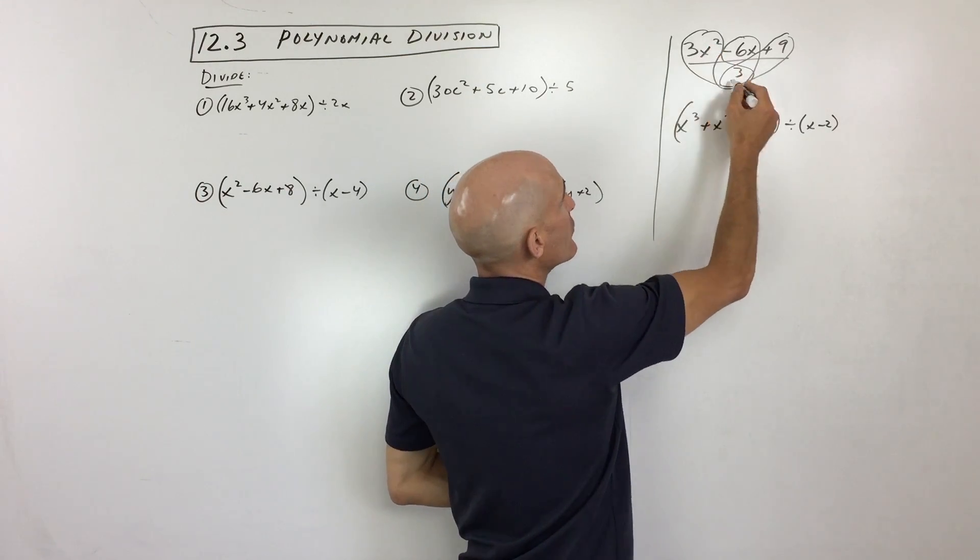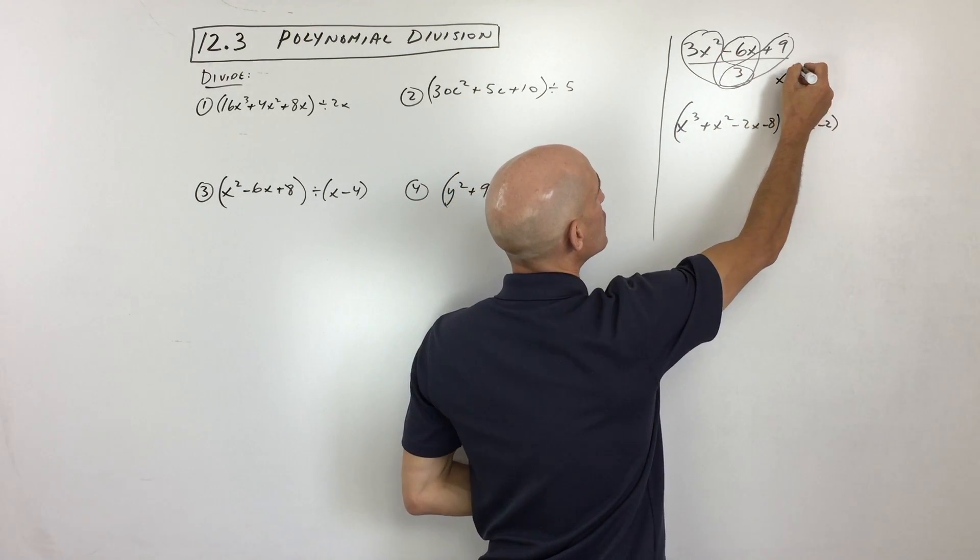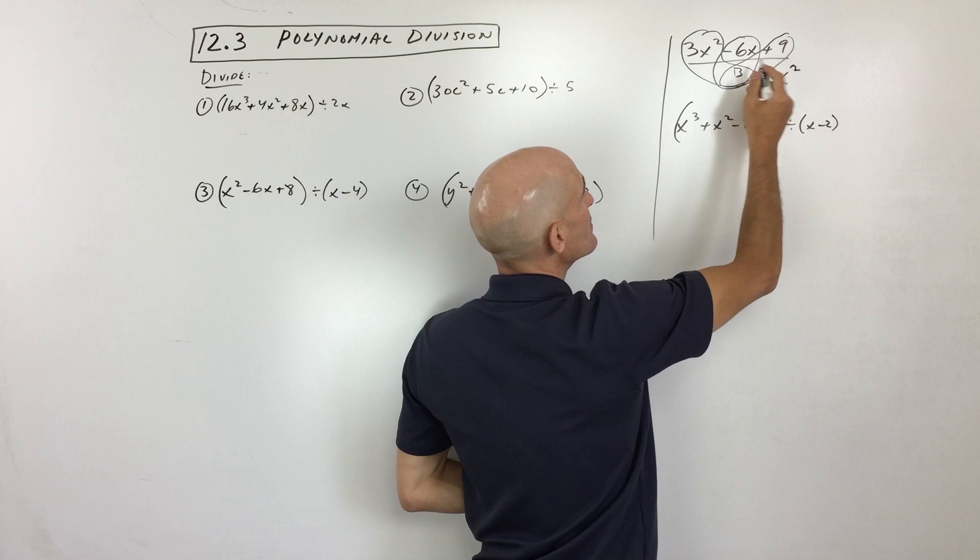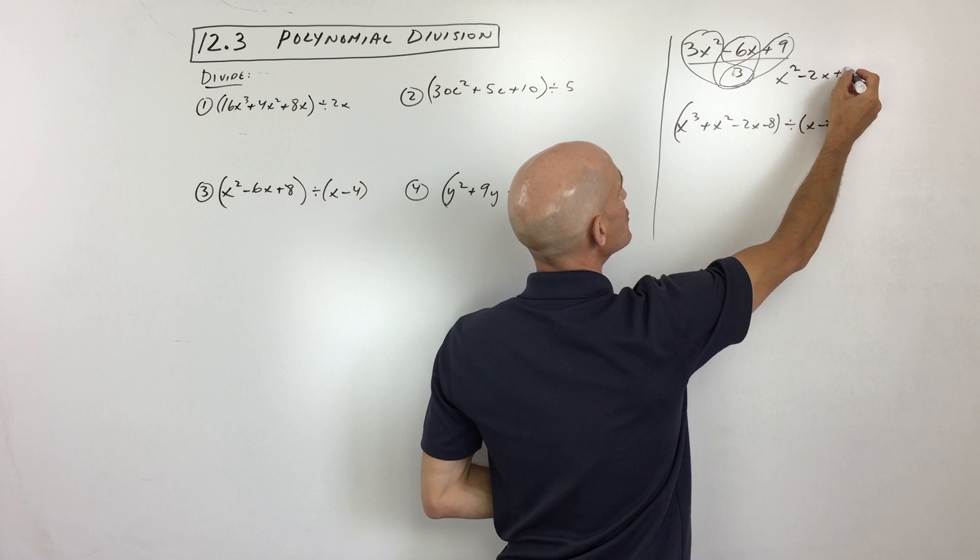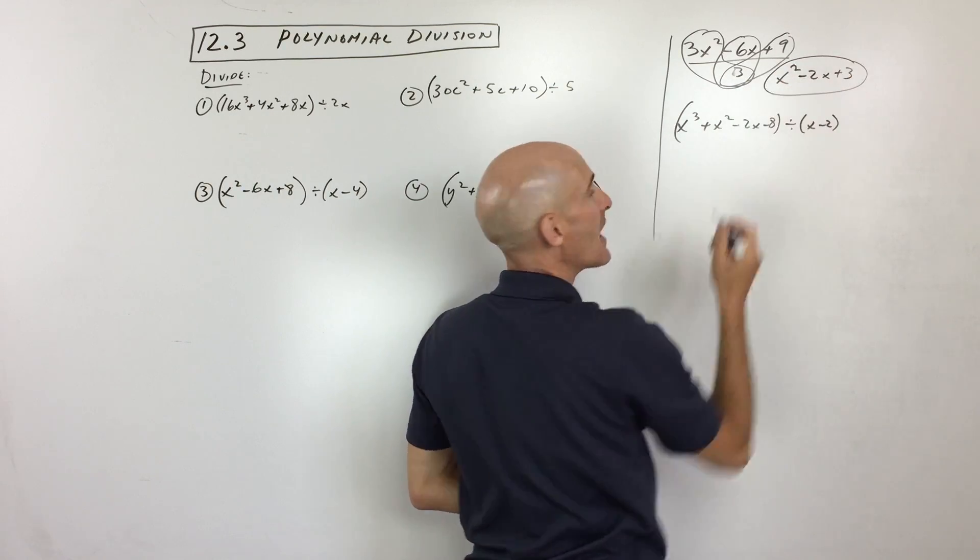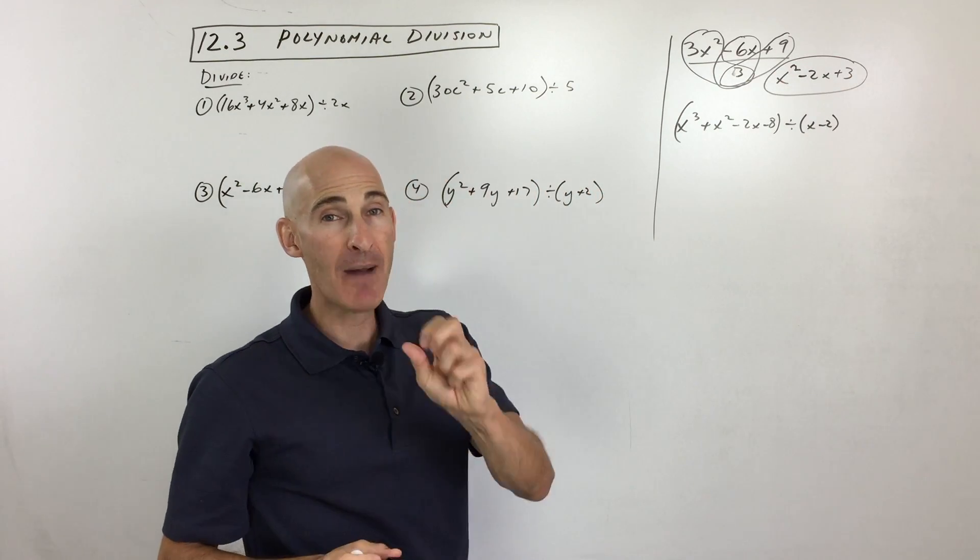So 3x squared divided by three, the threes cancel. You're just going to get x squared. Here are the negative six and three. They reduce, that gives you negative 2x, and then nine divided by three is just positive three, and you got it. So it's pretty easy when you're just dividing by a monomial, one term.